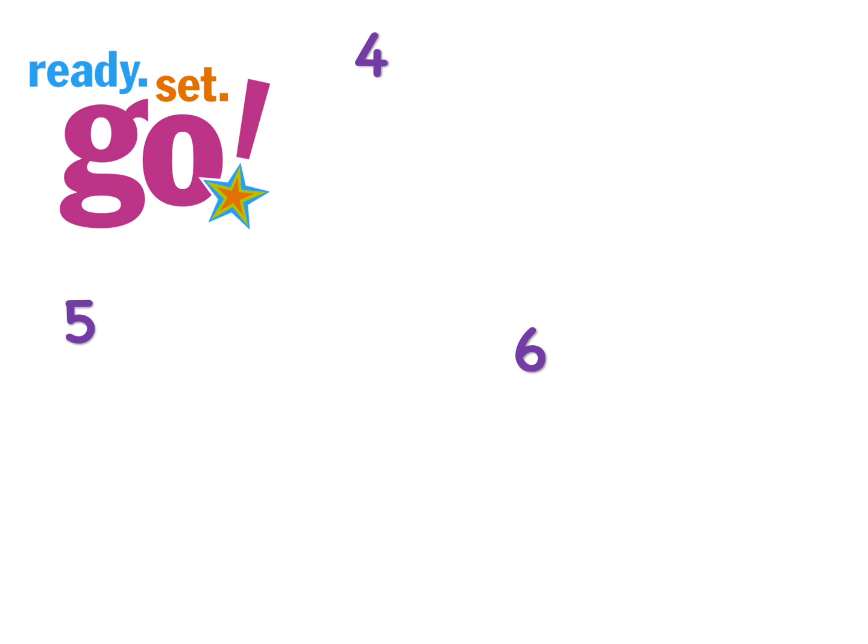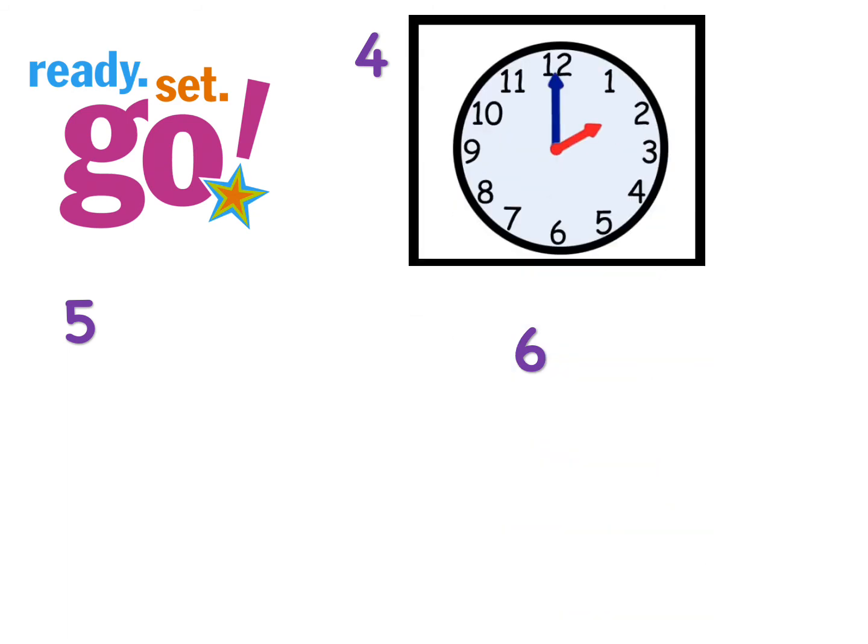Now we're going to move on to number four. I'm not going to give you the answers for the rest of these, boys and girls — you're going to write them down. Remember, if Miss Cullivan goes too fast, you can always pause the video to write your answers, or go back and watch it again if you didn't hear me. The good part about a video is you can watch it again and again. So this is number four — what time is it, boys and girls? Next to number four, write what time it is.